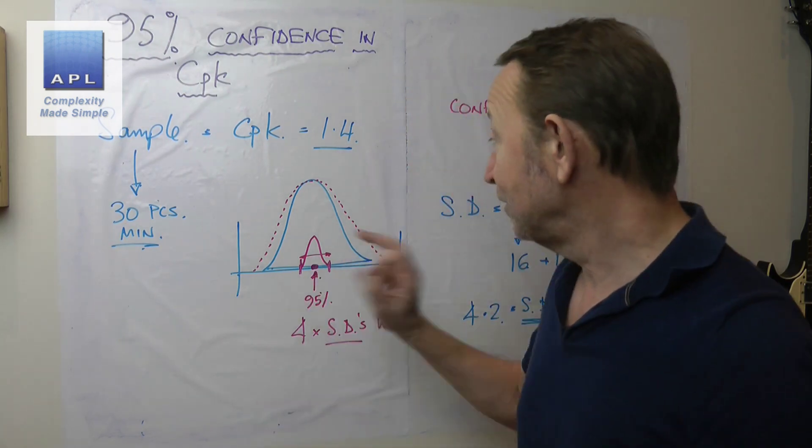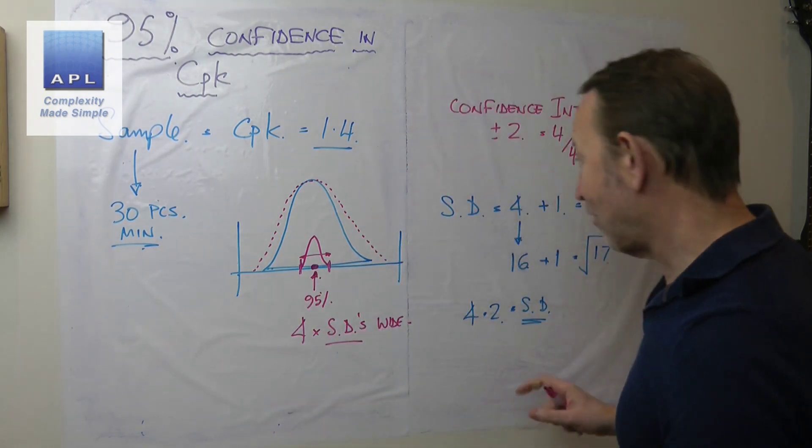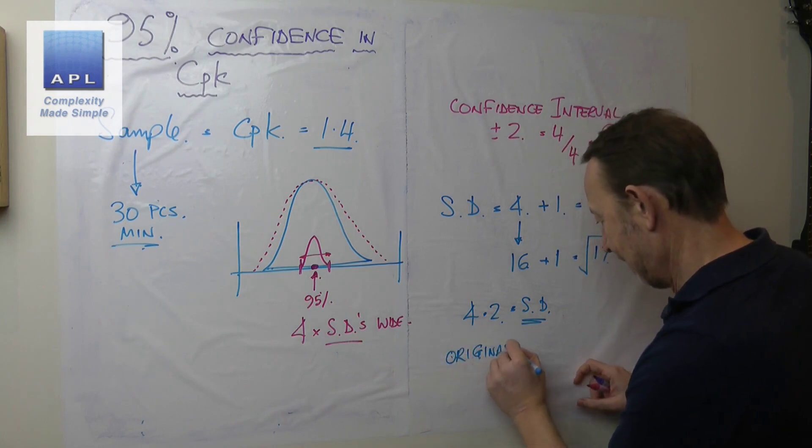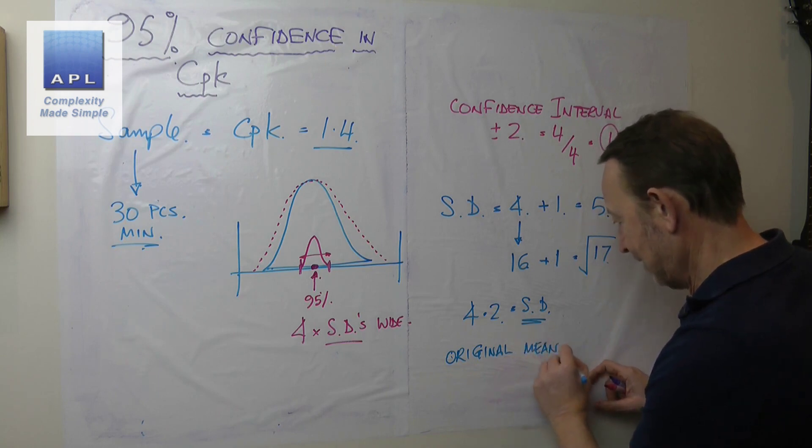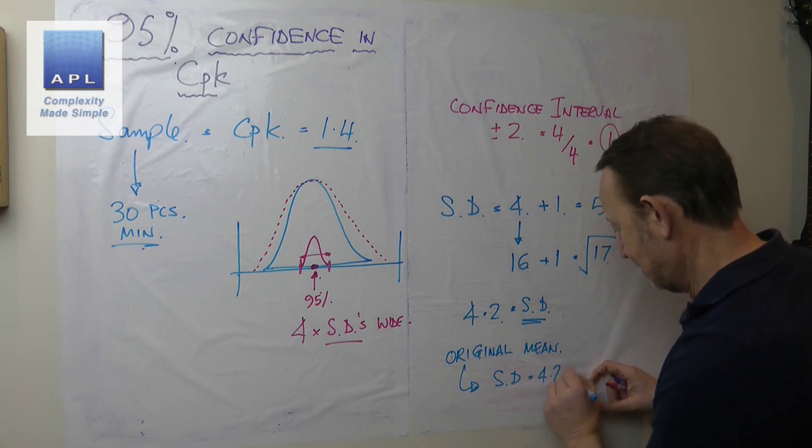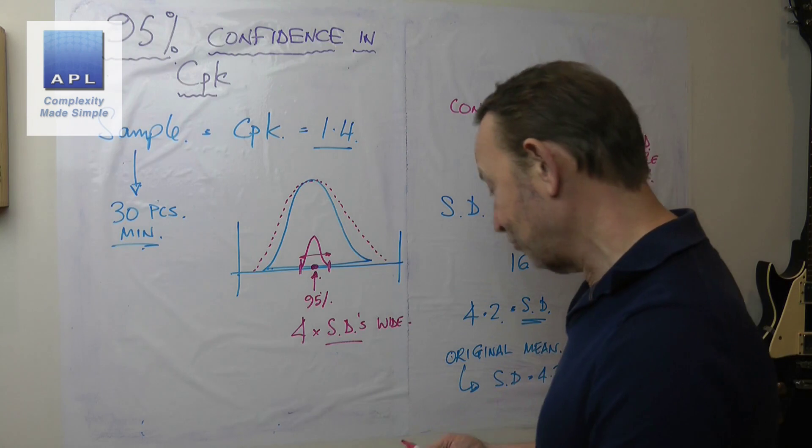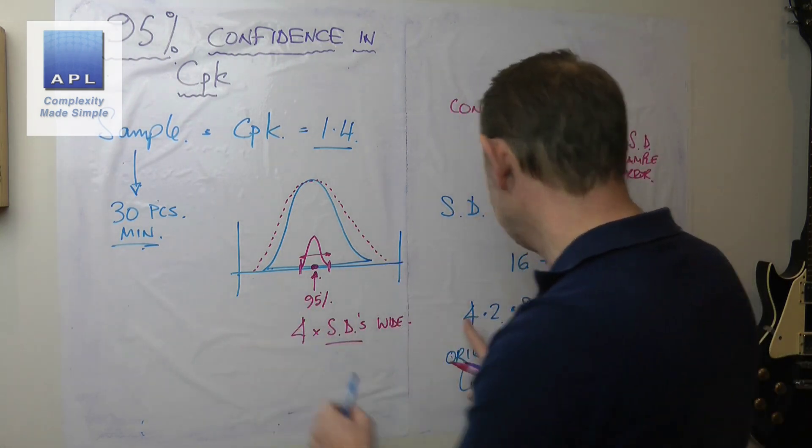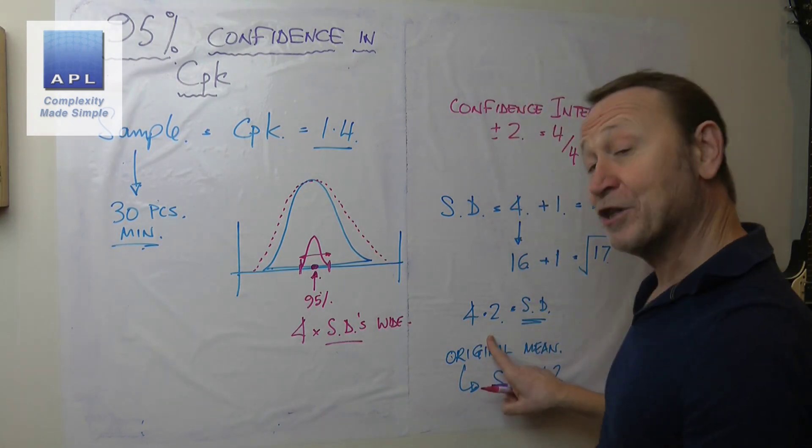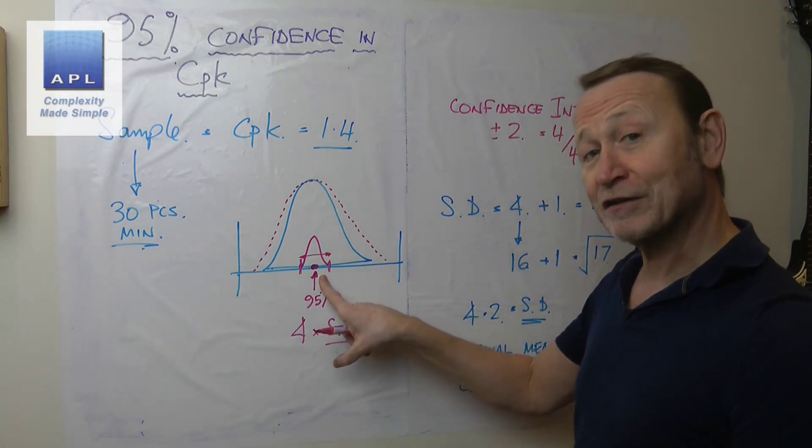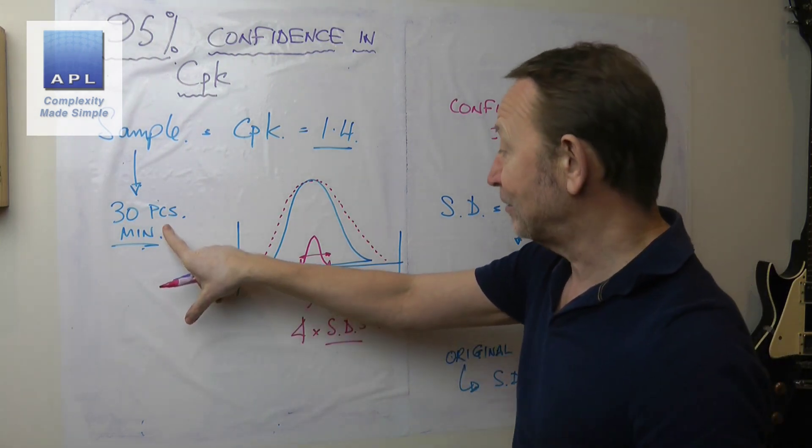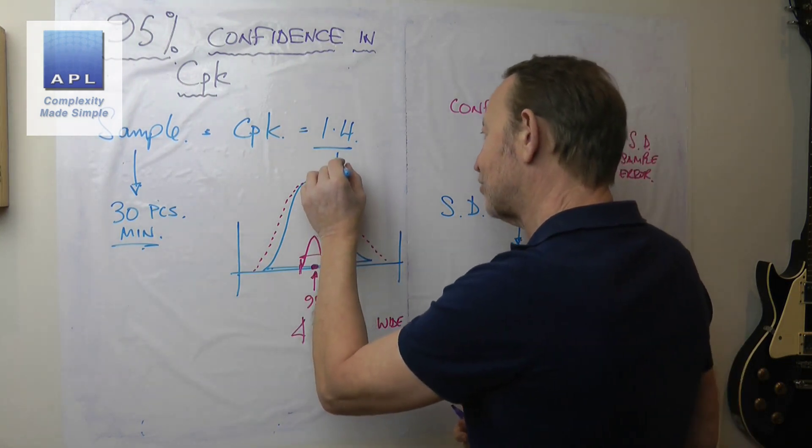What I'm now going to do is put that into my CPK calculation. I'll enter the original mean, I'll enter the new standard deviation, which is 4.2. Of course, what does that do? It degrades the CPK a little bit and we get the pink shape. You can see though the difference between them isn't that massive, especially if this confidence interval is pretty small because you've taken a reasonable sample size at the beginning.